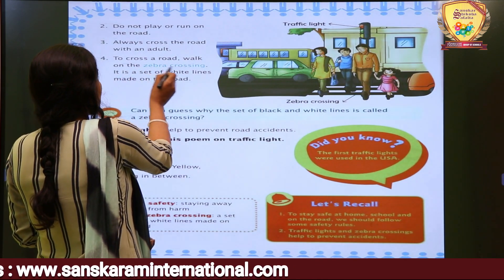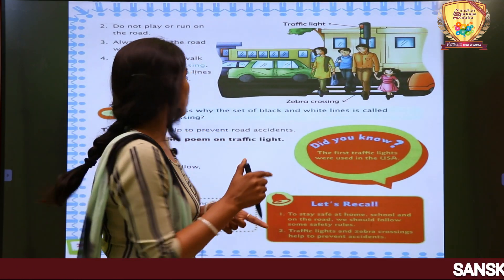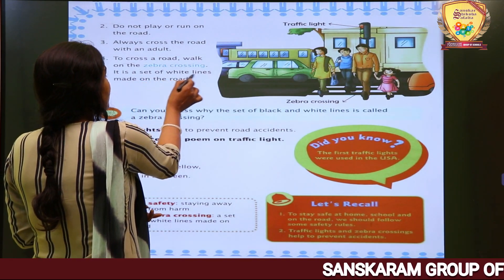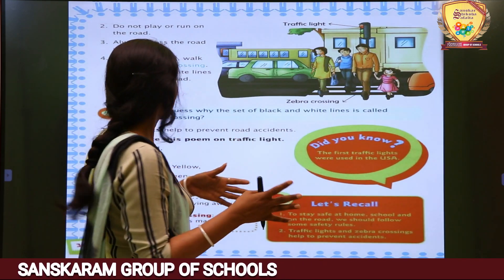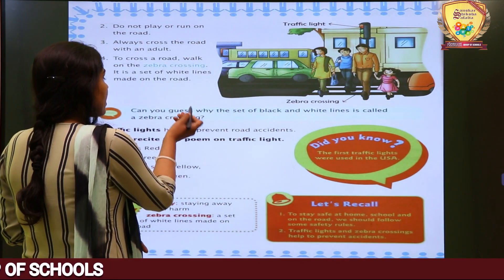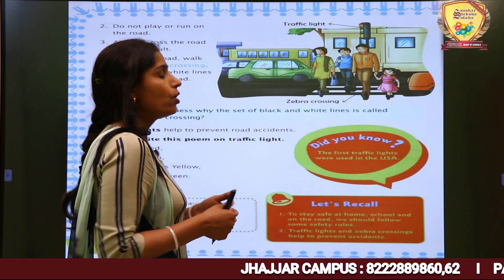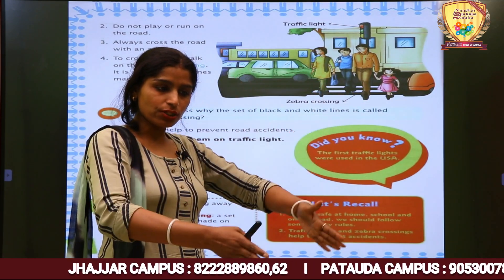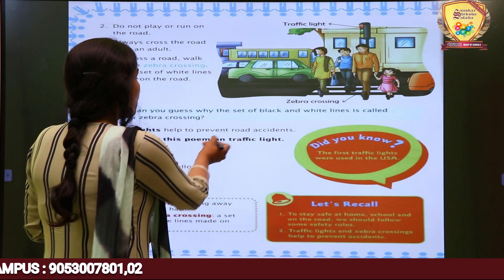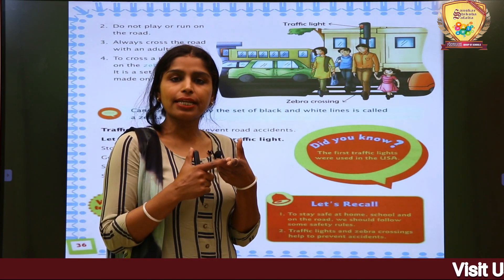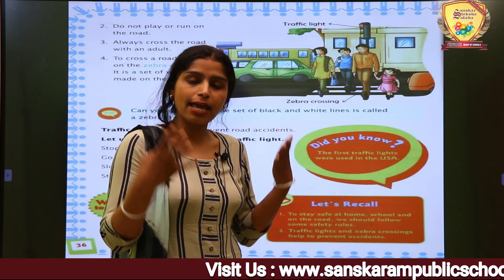To cross a road, walk on the zebra crossing — it is a set of white lines made on the road. It is a safe area for crossing the road clearly. Traffic lights help to prevent road accidents. The red, green, and yellow lights help us avoid accidents on the road.